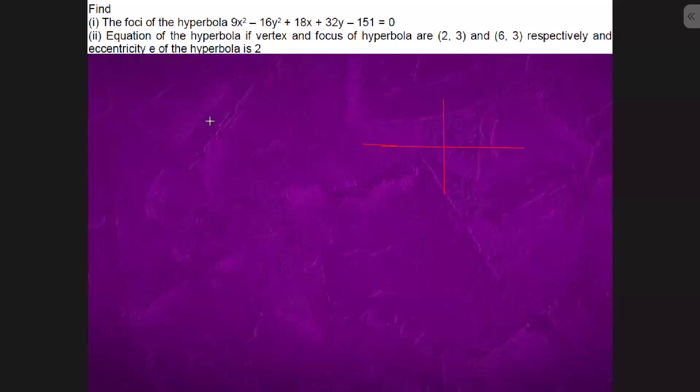And now we are told that we can see that focus and vertex are moving in a parallel line. Y is constant. What does that mean? That means that the axis is somewhere parallel to x-axis. This is the meaning of it.